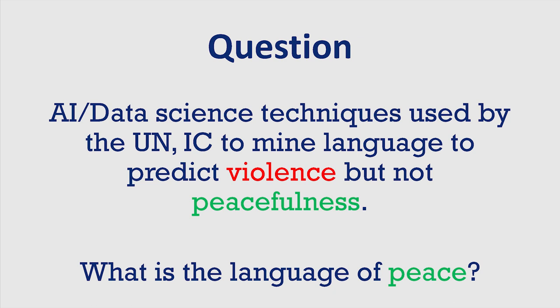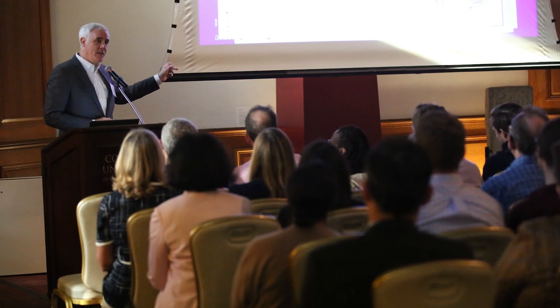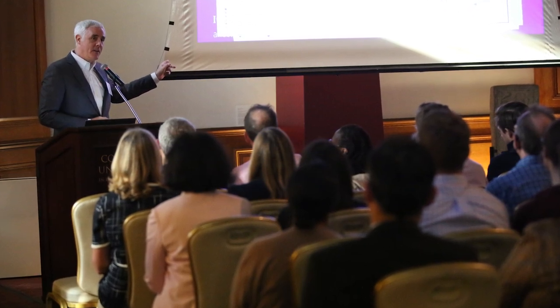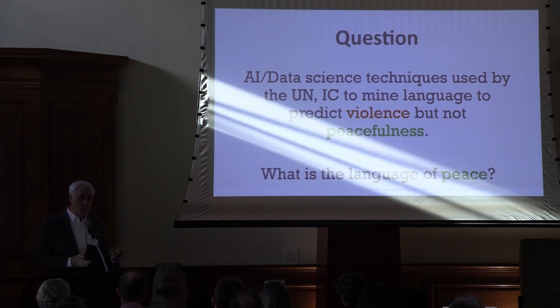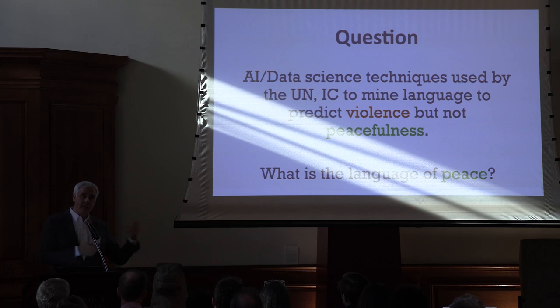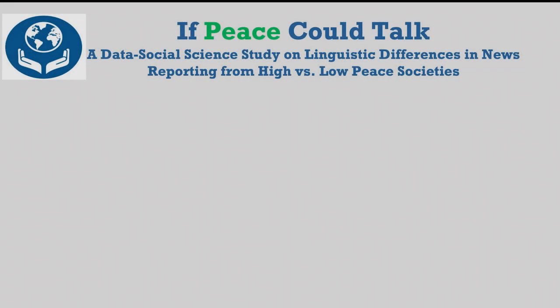But what I want to talk about is a collaborative project where we're applying AI and data science methods to understand and track peace speech. The UN and other groups use data science methods to predict violence — tracking language from newspapers and from Twitter to understand spikes in violence — but we don't know how to track peaceful societies and predict when they move toward and away from peace. So what is the language of peace?